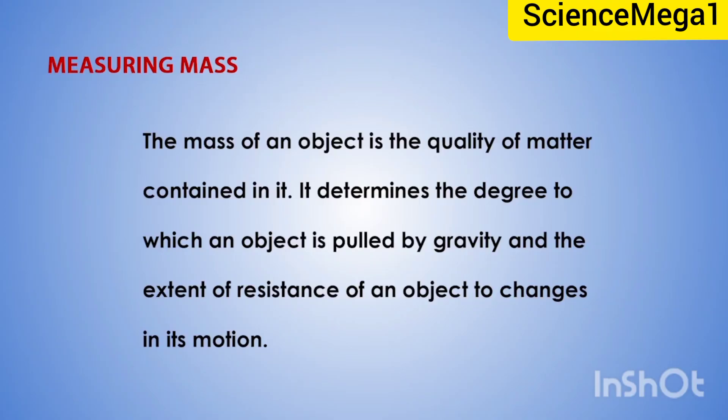Now let's move on to measuring mass. The mass of an object is the quantity of matter contained in the object. It determines the degree to which an object is pulled by gravity and the extent of resistance of an object to change in its motion. It is different from the weight of an object, because weight is a force — the amount of gravitational force acting on a body.